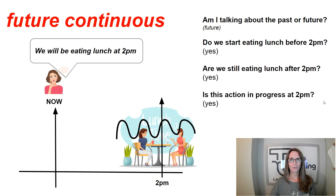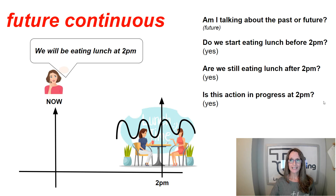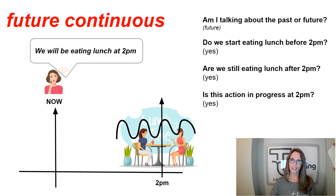For example, we will be eating lunch at 2pm. Am I talking about the past or the future? The future. Do we start eating lunch before 2pm? Yes. Are we still eating lunch after 2pm? Yes. So, is this action in progress at 2pm? Yes.